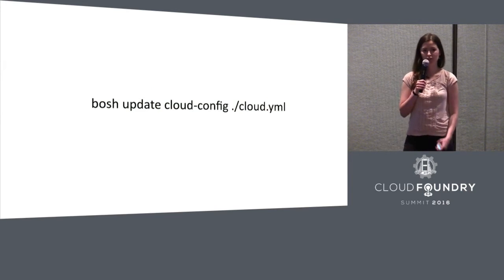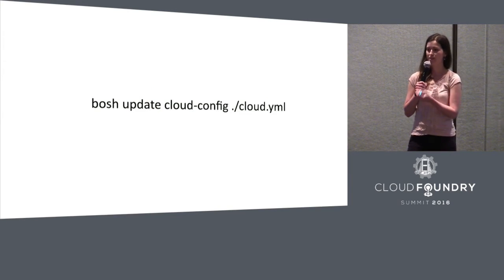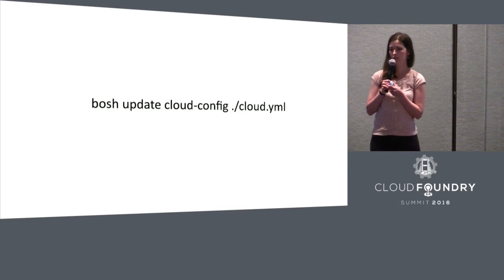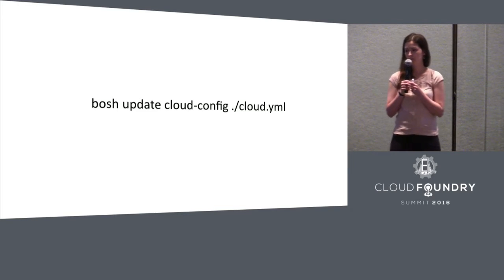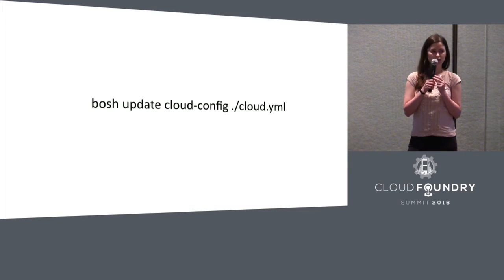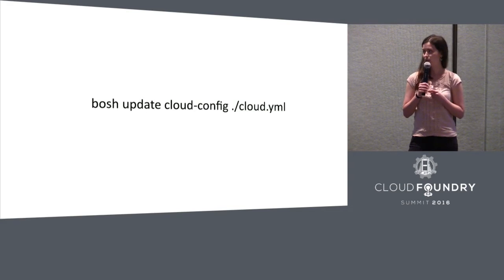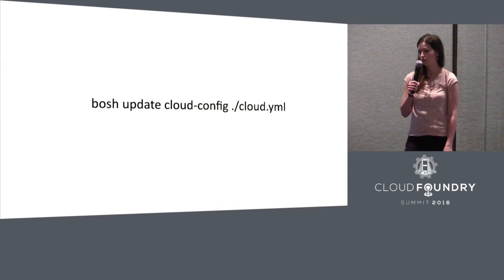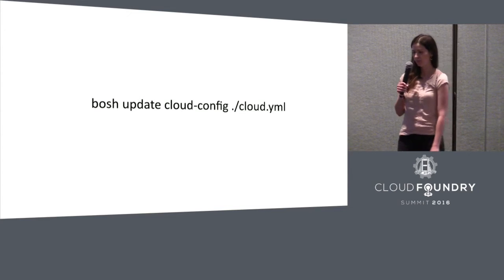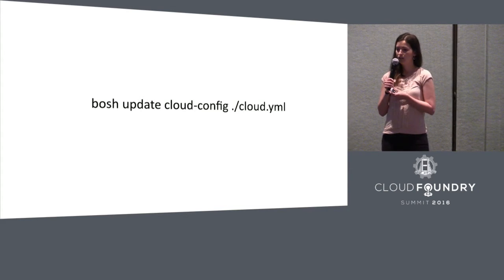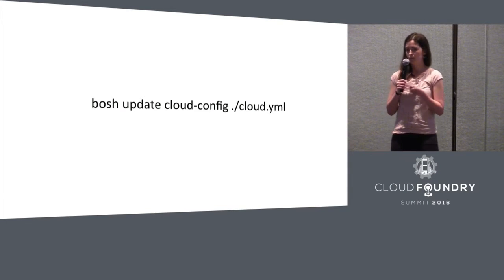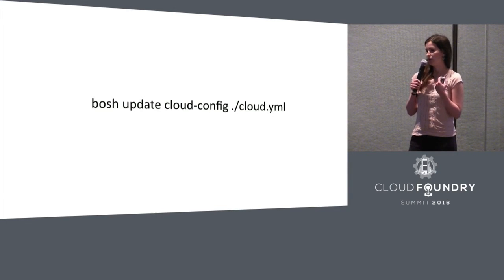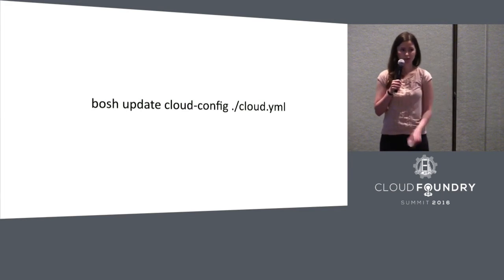The way you configure your director with cloud config, you run this command. Once the directory is configured with the cloud configuration, Bosch will start allocating IPs for you and you don't have to worry about IP allocation from that point. Once your directory is configured with cloud config, your deployments that are already deployed will still behave as they used to, but they will start using cloud configuration whenever you redeploy them on the next deploy.